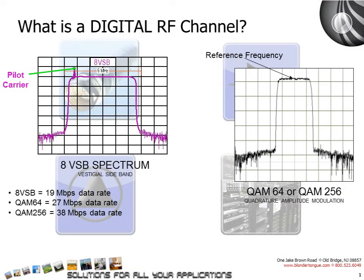What is a digital television RF channel? A digital television channel utilizes the same channel spacing and frequency assignments as an analog channel. However, digital channels can contain multiple programs within the same 6 MHz bandwidth that fits one analog program, and can also support high and standard definition programming. There are two different types of digital we use in a television network: 8VSB and QAM.